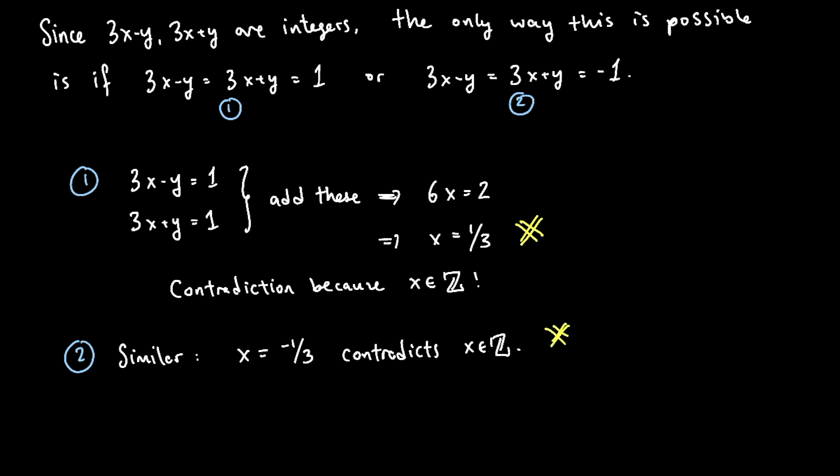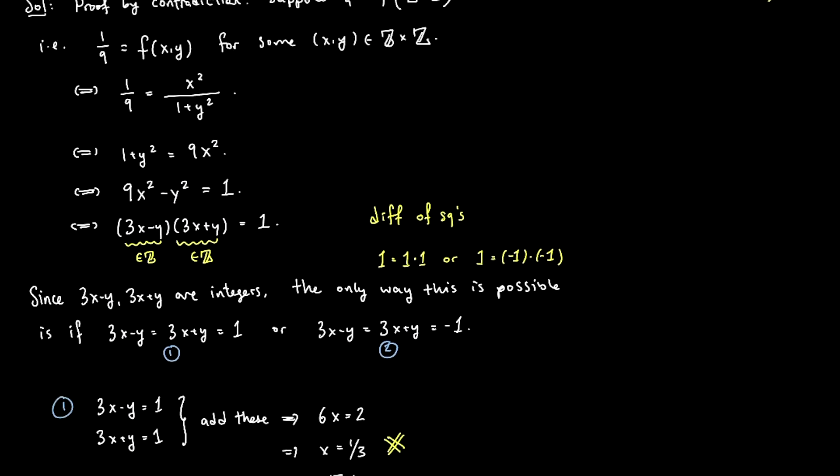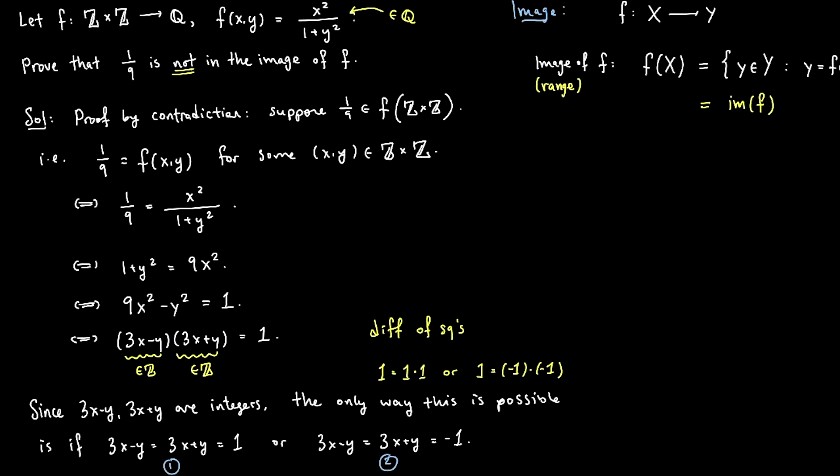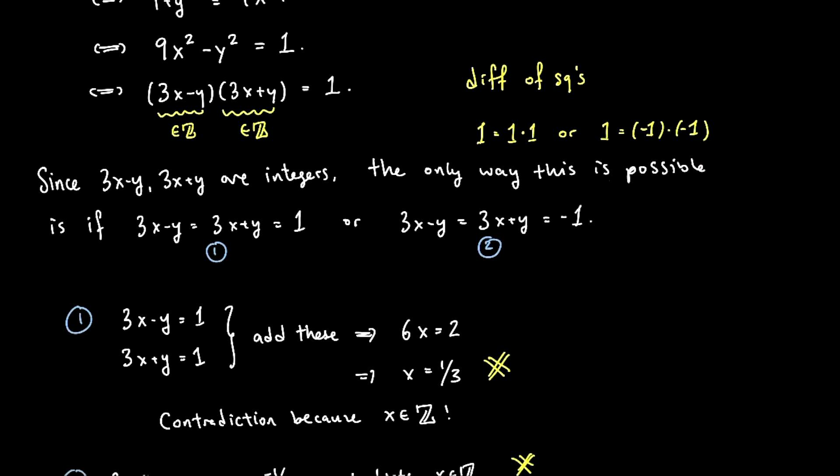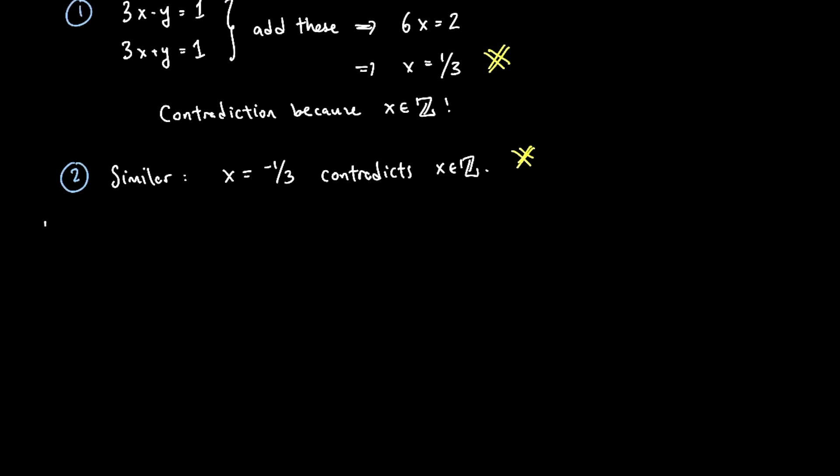So in either of my two cases, I concluded a contradiction. I concluded that x was not an integer. So in either case I've got a contradiction, which tells me, therefore, 1 over 9 is not in the image of this function. And that's a proof by contradiction.